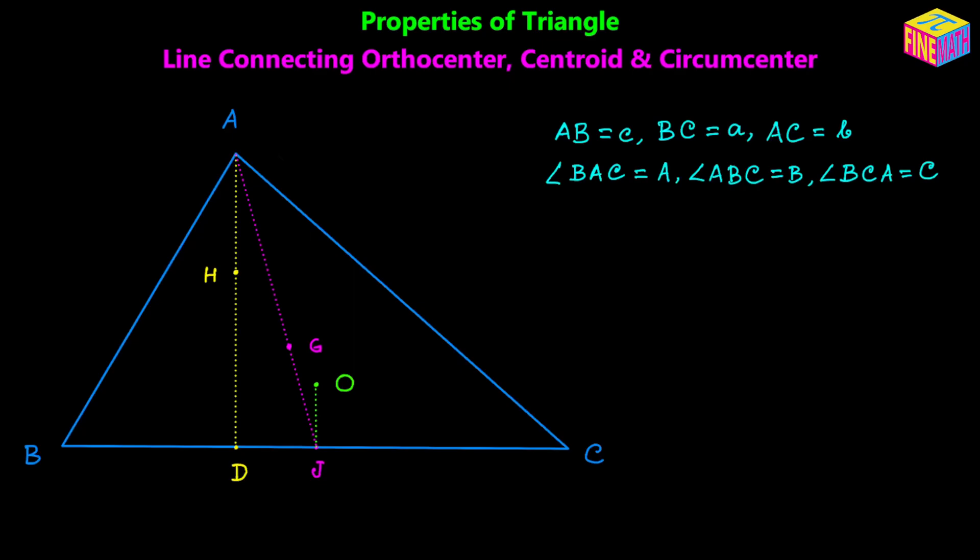Now I am going to remove some of these lines and keep only the necessary ones — one altitude, one median, and one perpendicular bisector. Next I am going to join H and O. We don't know yet if G will be collinear with H and O; that is something we are going to prove. So initially let's just join H and O, and it looks like G is on that line — which we will prove.